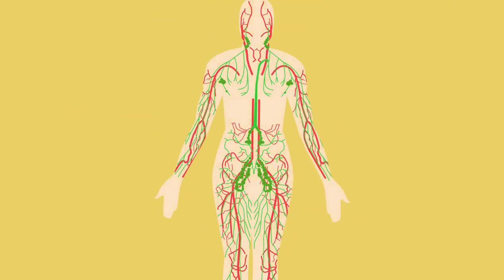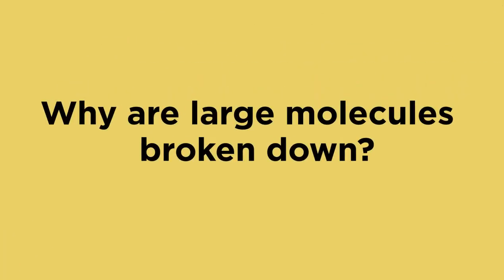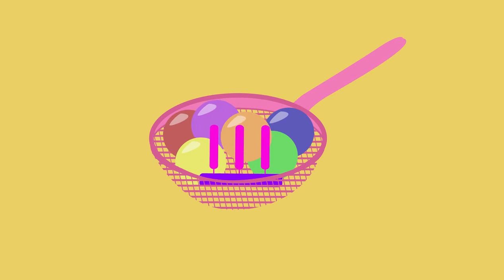Once absorbed into the blood vessel in the small intestine, the digested food molecules can then be transported around the body to where they are needed. So why did those large molecules need to be broken down in the first place?